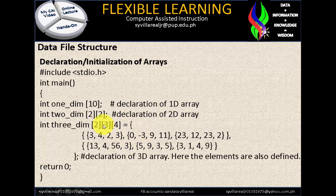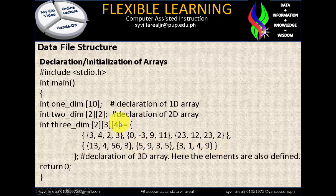Looking at the 3D array: there is a 2 at the beginning which separates 2 sets. The first set and second set each have 3 subsets — 1, 2, 3 — and each subset has 4 values or elements. That's the idea of a 3D dimensional array. The declaration of a 3D array also defines elements, ending with return 0.